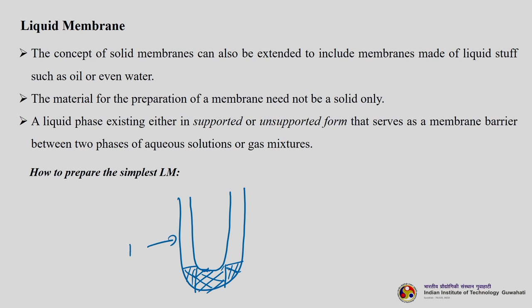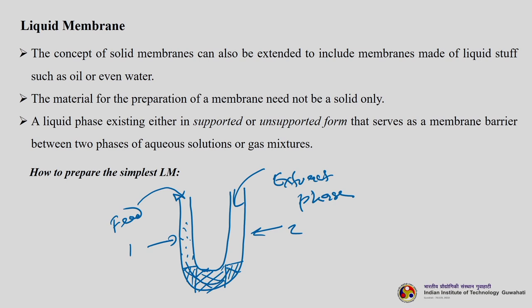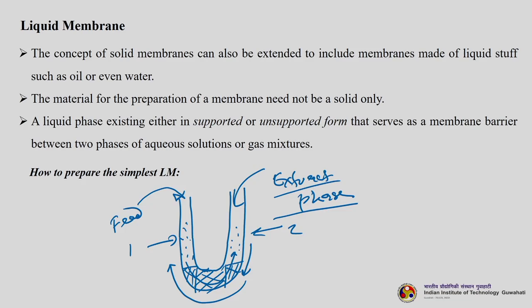There is limb 1 and limb 2. In limb 1 you will have your feed phase, and in limb 2 there is an extract phase — something extra which is not present in other membrane systems. This phase will extract the materials we want to remove from the feed phase. The solutes will travel through this liquid membrane and come to the extract phase. The extract phase is chosen such that it will trap the solutes and not allow back diffusion. Otherwise the solutes would transport back to the feed side and you would be back to the original state.